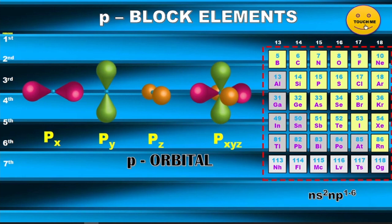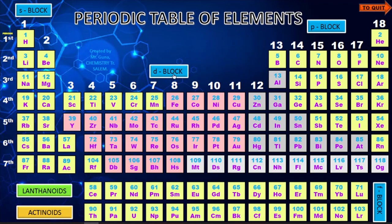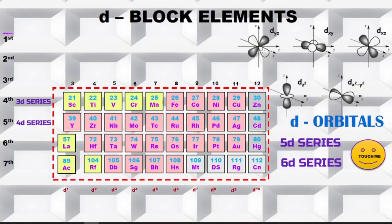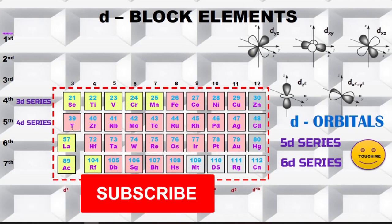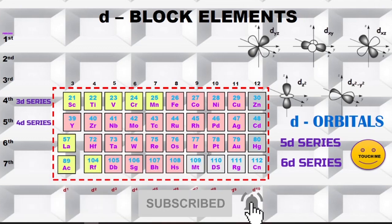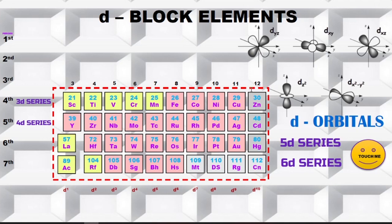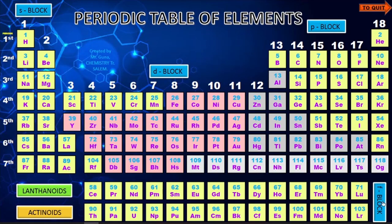For D block elements, different orbital orientations are shown along with the different series: 3d, 4d, 5d, and 6d series, covering groups 3 to 12, including the completely filled 12th group. Configurations such as d1, d2, d3, and so on are discussed clearly. Click 'Touch Me' to return to the main periodic table.